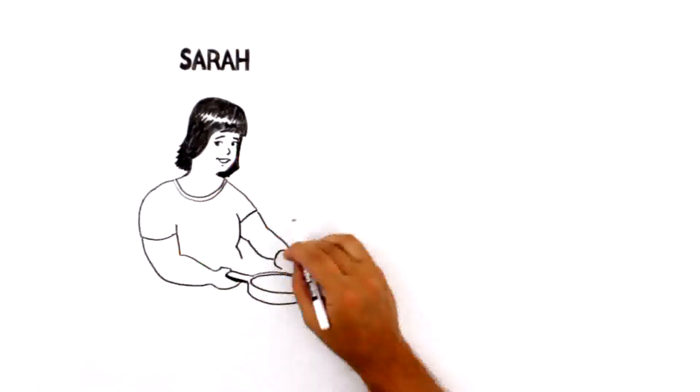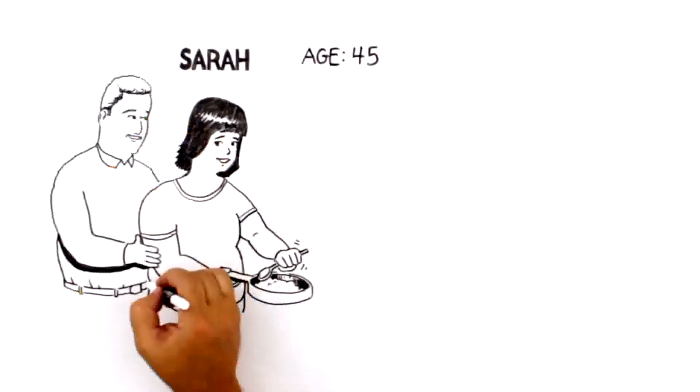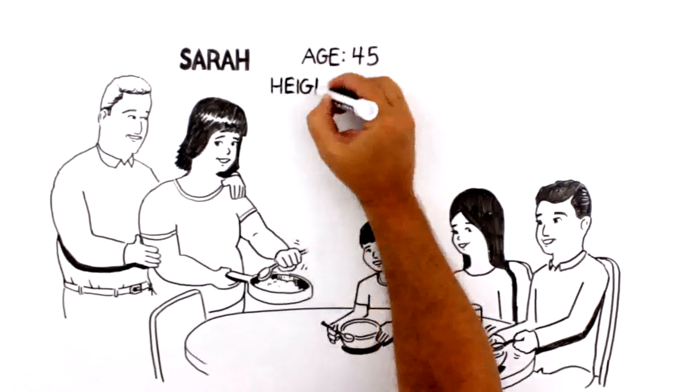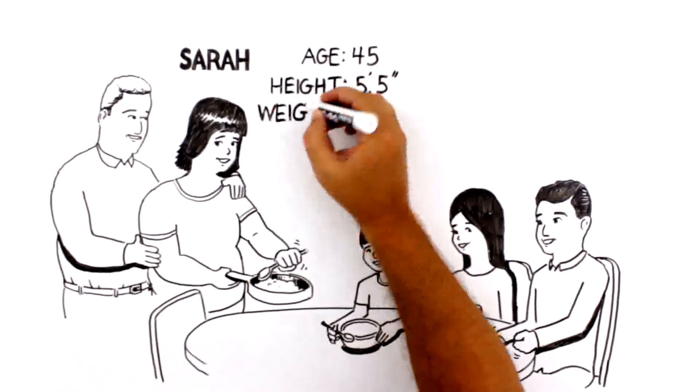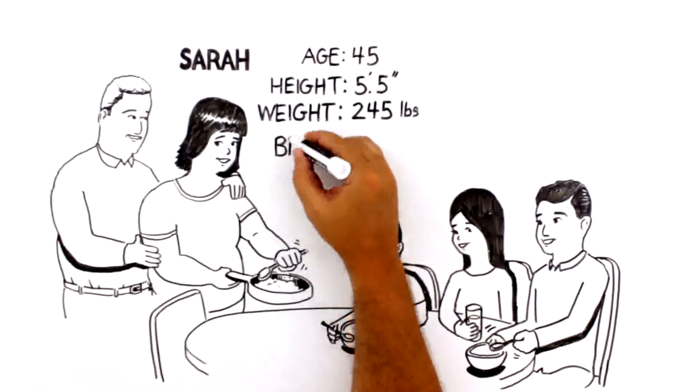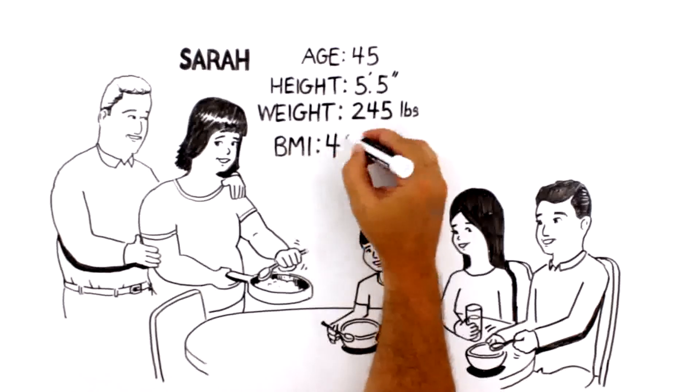Take Sarah, for example. She's a 45-year-old wife and mom of three kids. She's 5'5 and weighs 245 pounds. That means her body mass index, or BMI, is 41.